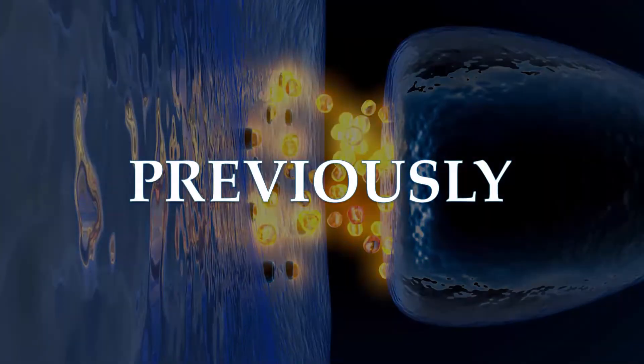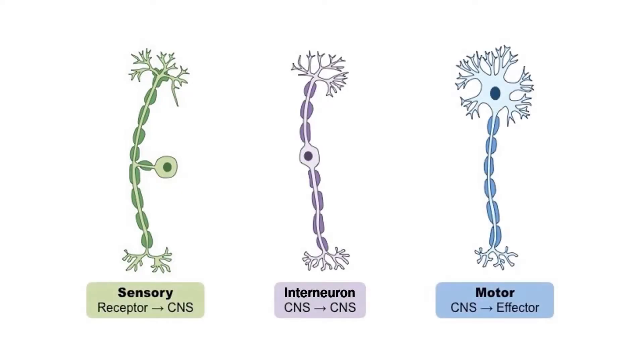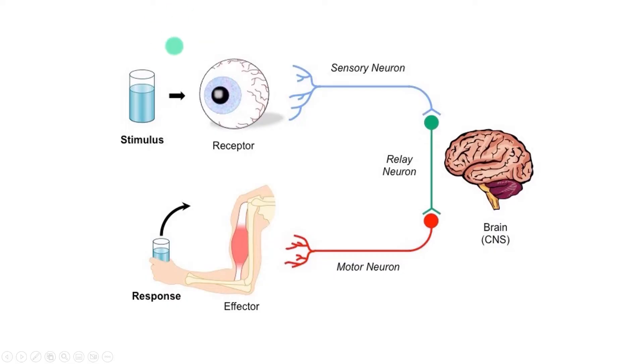Previously, in Unit 1 of QCE Psychology, we saw that neurons are the basic unit of the nervous system and there are three types that work together to send messages, like when this floating eyeball wants a drink.